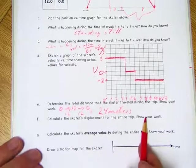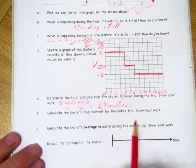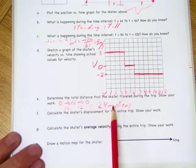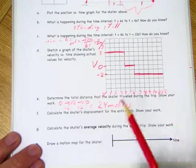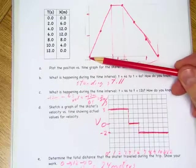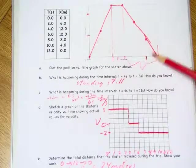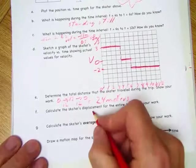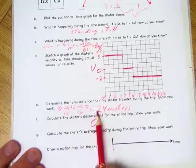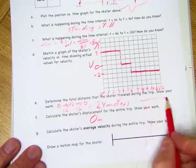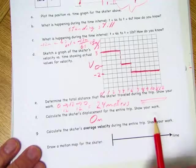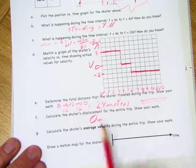Calculate the skater's displacement. And remember, displacement means how far they are from where they started. Well, if you look at the graph, they started at 0, moved out, stood still, and moved back. So they started at 0, ended at 0. Their displacement is 0 meters. I know they traveled a total of 24 meters, but if you start here, you go out, and you come back, you're back where you started, there's no displacement.